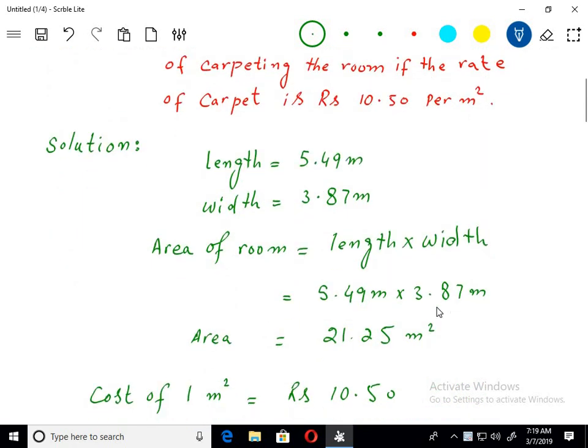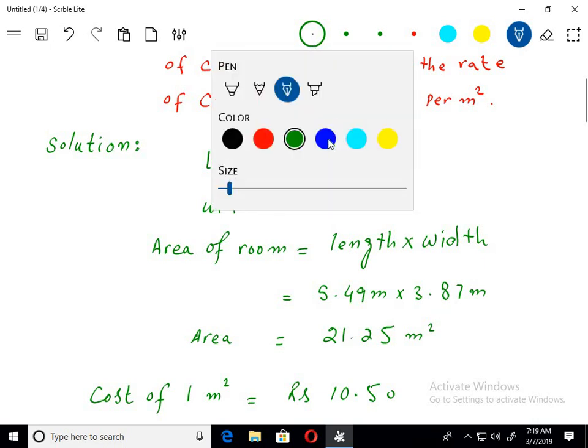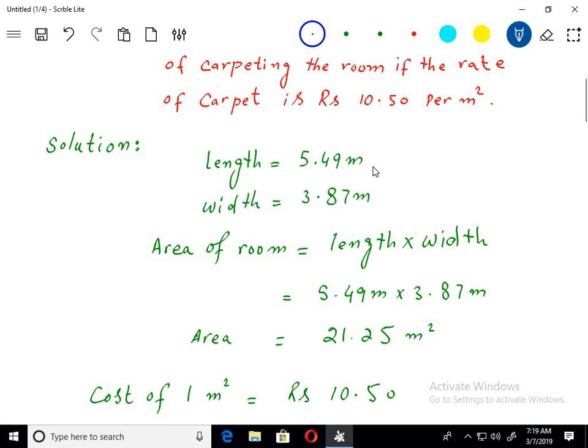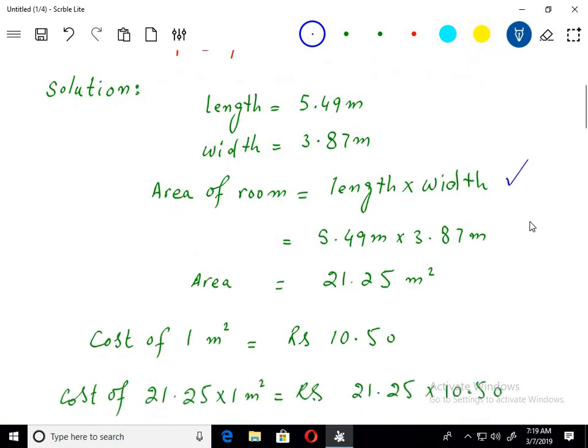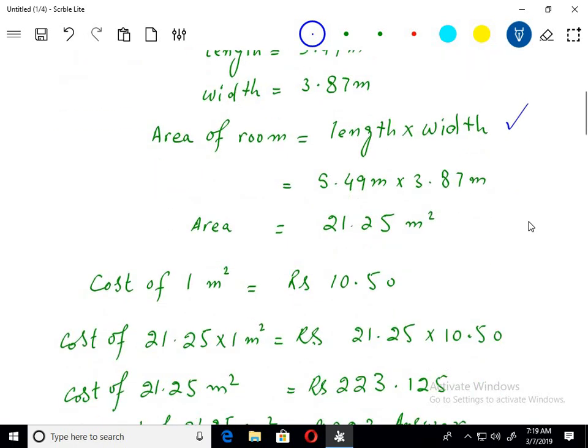Given data is length equals 5.49 meters and width equals 3.87 meters. We can find the area of the room with this formula: Area equals length times width. Putting the values of length and width and multiplying, we get the area.